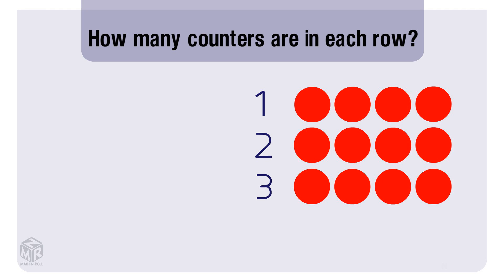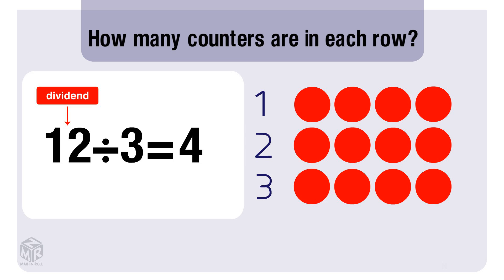We've used all of our counters and we have four in each row. We can write our division sentence as 12 divided by 3 equals 4. We divide 12, the total, by 3, which is how many rows we have, to get 4 in each row.